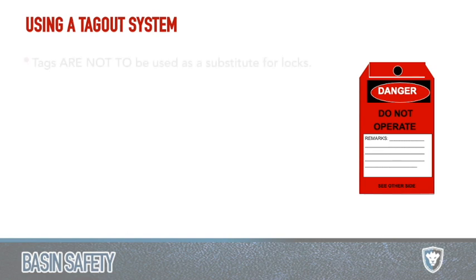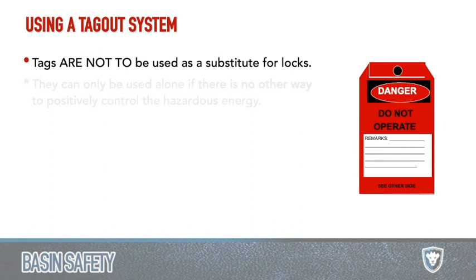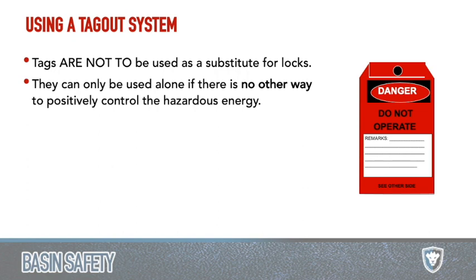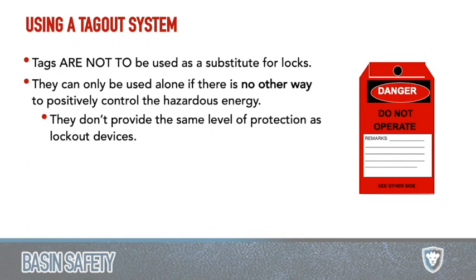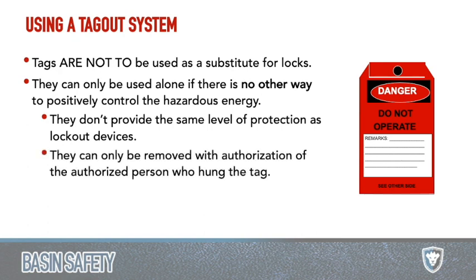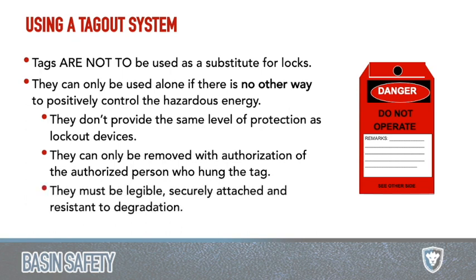For the tagout system, everyone is supposed to have their own tag. If you don't want 20 tags on a piece of equipment, you can use one tag where all relevant people are identified. Tags are not a substitute for locks, though — you can't just put a tag on it and say 'don't use this,' because tags can be removed; they're not permanent. They can only be placed and removed by authorized people. Tags also need to be legible — use a fine tip Sharpie so words are readable.